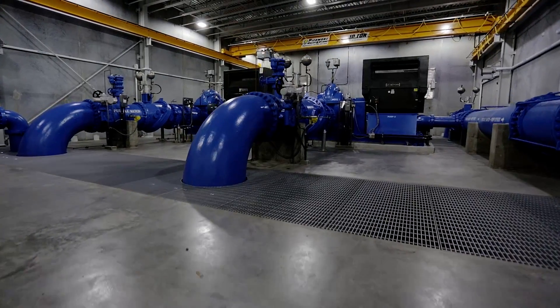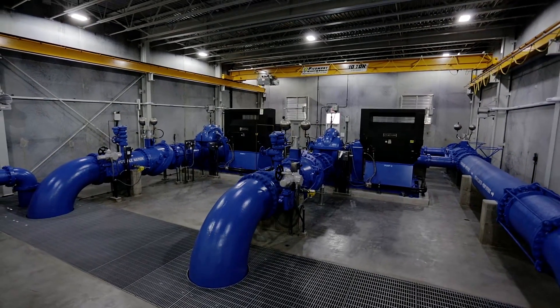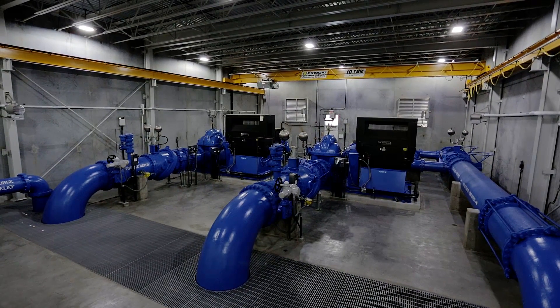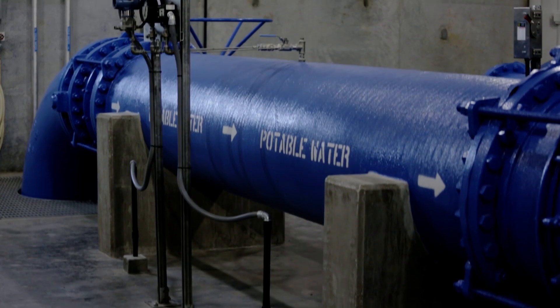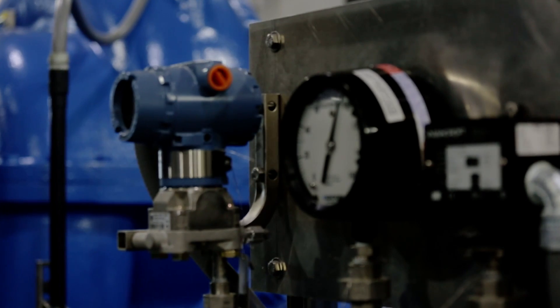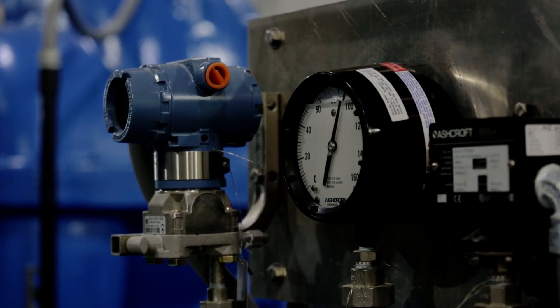Now that the treatment process is complete, the distribution of the water is carried out. The water leaves the plant under pressure generated by electrically powered pumps. A constant pressure of around 80 to 90 PSI is maintained by these initial pumps and pump stations in various places throughout the system.